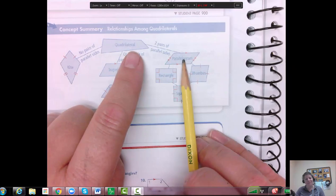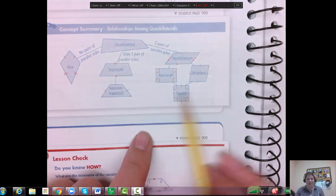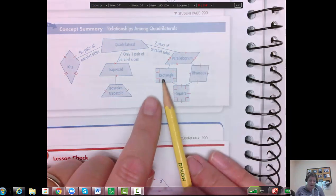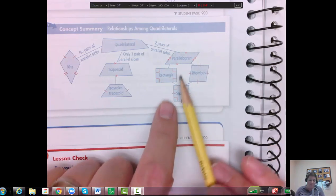Or you could be a parallelogram going this way, and we had three kinds of parallelograms: a rectangle, a rhombus, and a square.